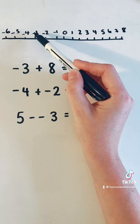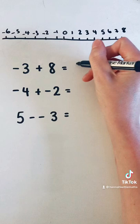So -3 + 8, we're going to start at -3, and when we add, we go to the right. So 1, 2, 3, 4, 5, 6, 7, 8, so that's 5.